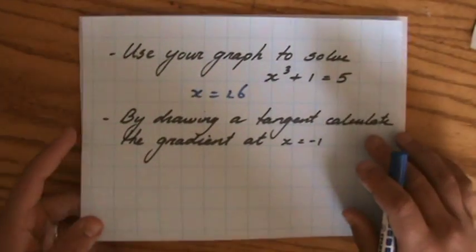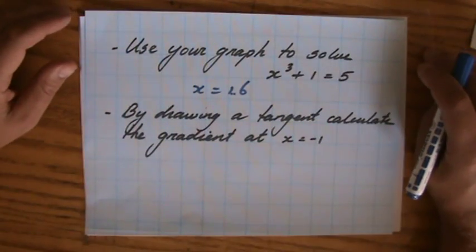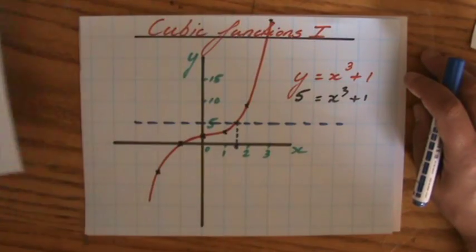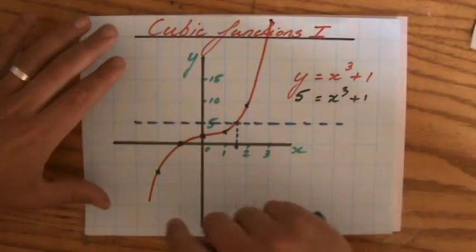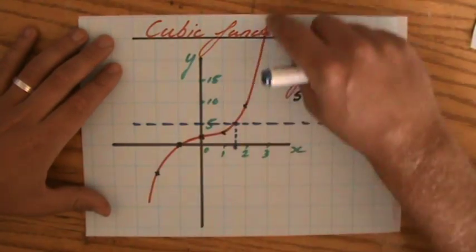By drawing a tangent, calculate the gradient at x is minus 1. Because the interesting thing about these curves is that the gradient is not constant. It changes all of the time.